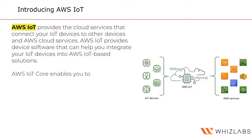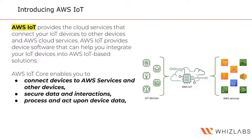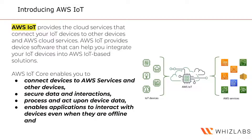AWS IoT Core enables you to connect all these devices to AWS services and to other devices. Security is very important while all these connections and data flows are happening, so AWS IoT Core secures this data and these interactions. Tons of collected data can be processed and acted upon, and applications can interact with devices even when those devices are offline, connecting based on the last known configuration or state.